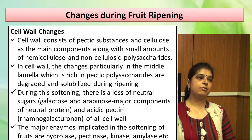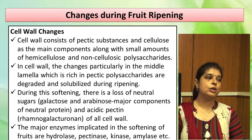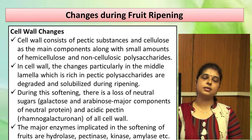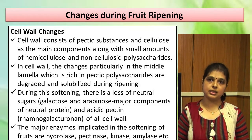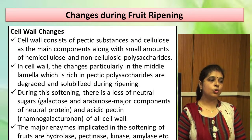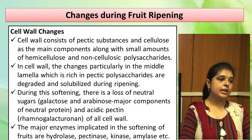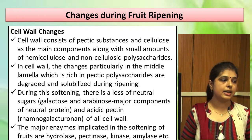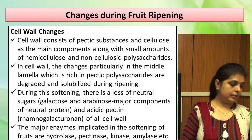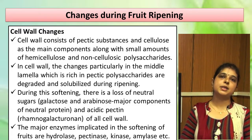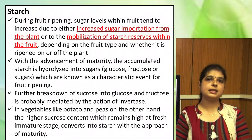Why do cell wall changes happen during ripening? The cell wall is composed of pectic acid, cellulose, hemicellulose, and other non-cellulosic polysaccharides. There is also a middle lamella rich in pectic polysaccharides. When ethylene formation starts, the activity of different enzymes increases — these enzymes are hydrolase, pectinase, kinase, and amylase — and thus cell wall changes begin during the ripening process.